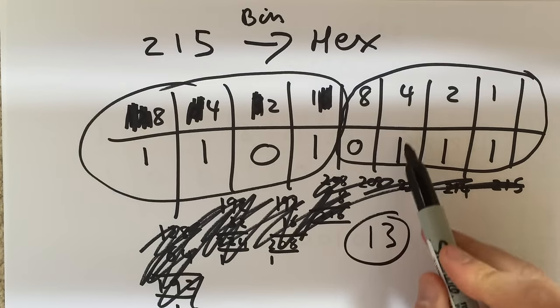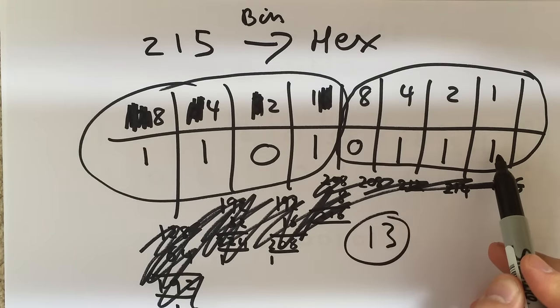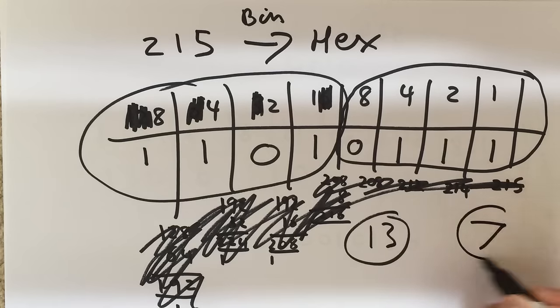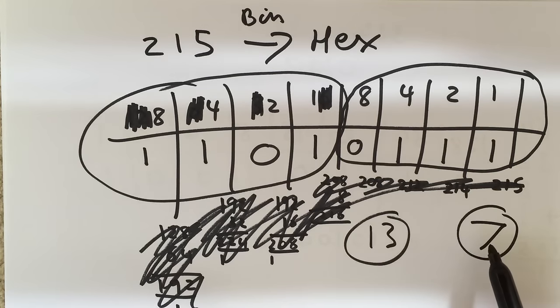I've then got this set. So I've got 4 and 2 is 6. Add the 1 is 7. And that would be my hexadecimal number.